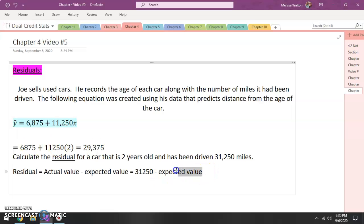All right, so if my residual, my expected value, I'm supposed to be, this car should have 29,375. And finally, if I subtract these two values, 31,250 minus 29,375, I end up with 1,875 miles.